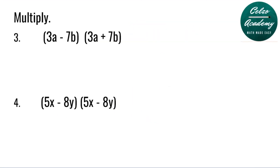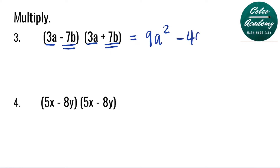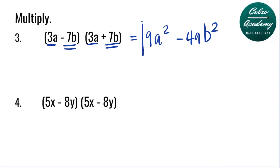Question number 3: (3a − 7b) multiplied by (3a + 7b). This is a product of sum and difference. All we need to do is multiply the first terms 3a and 3a, that's 9a squared, and then multiply negative 7b and positive 7b, which is negative 49b squared. Or you can square the first term — that's 9a squared — minus square the second term, that's minus 49b squared.